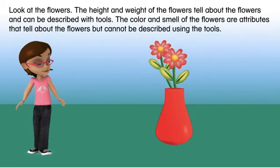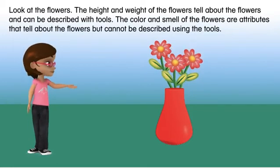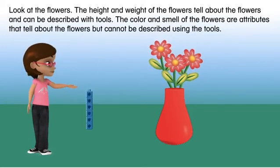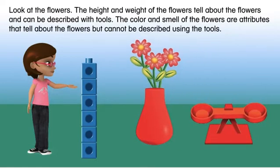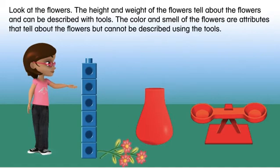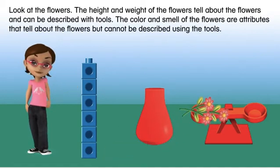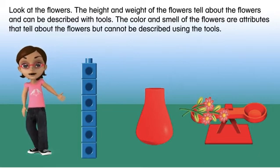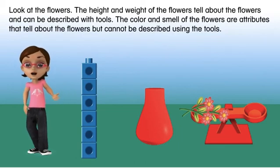Look at the flowers. The height and weight of the flowers tell about the flowers and can be described with tools. The color and smell of the flowers are attributes that tell about the flowers, but cannot be described using the tools. Tools can help us find out some things about an object, but not everything.